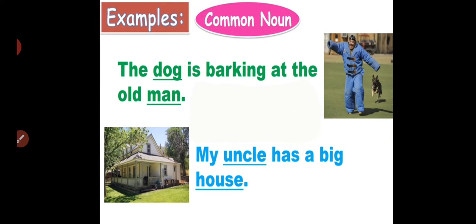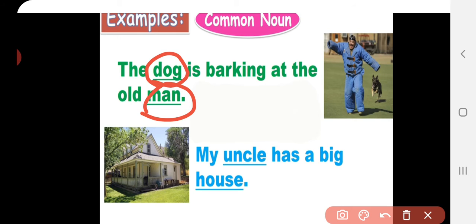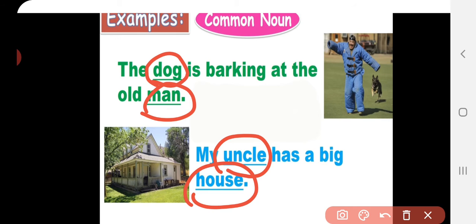First example: The dog is barking at the old man. What are the common nouns here? Dog and man are the common nouns. Second example: My uncle has a big house. Uncle and house are the common nouns. So here we can see the names are the common nouns.